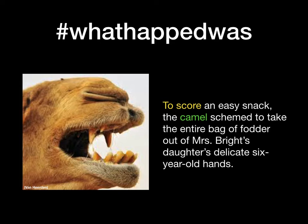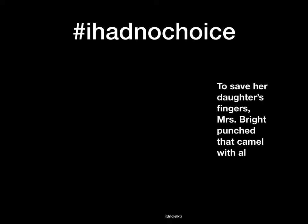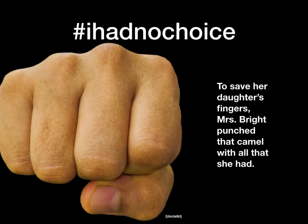So what do you do when a camel is about to bite your daughter's fingers off? I didn't have time to think about whether I would attack the camel or grab my daughter — I swear I had no choice. Here's my sentence: 'To save her daughter's fingers, Miss Bright punched that camel with all that she had.' Who's the subject? That's right, it's Miss Bright — she was punching and trying to save. This P comma S works out just fine — it describes the subject and starts with 'to' plus a verb.